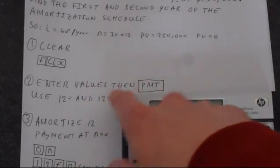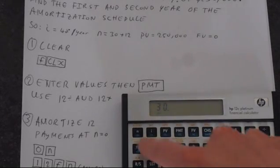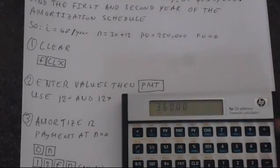So we'll do a similar thing for N. So if we just put in 30, then press G, and then the N button, we've got 12 times, so that's 360.